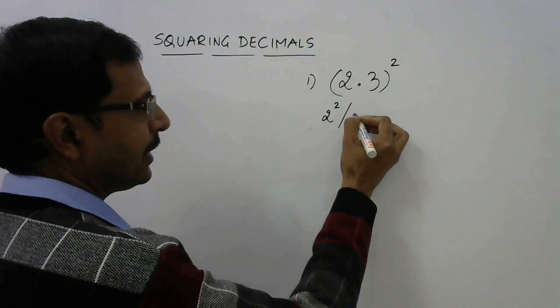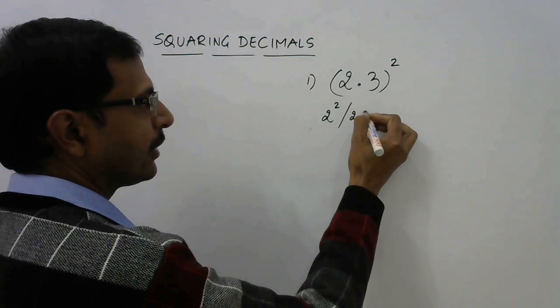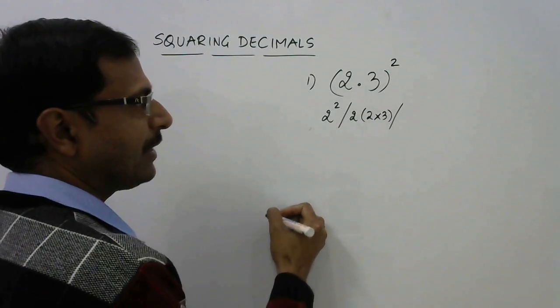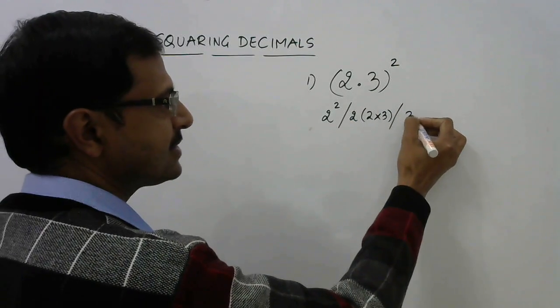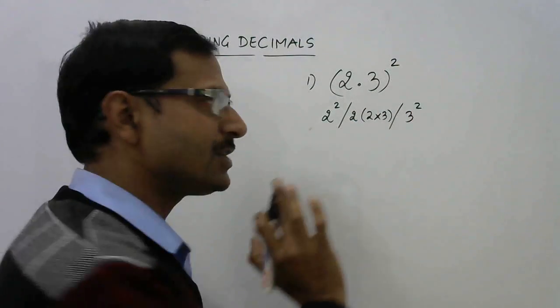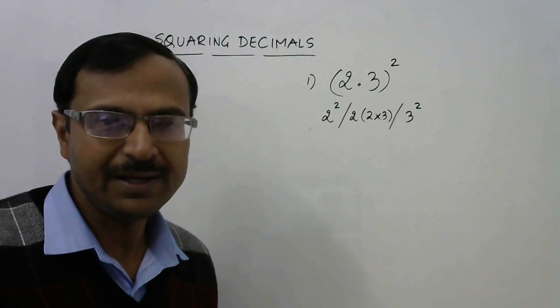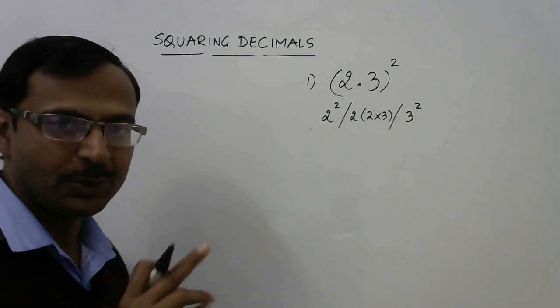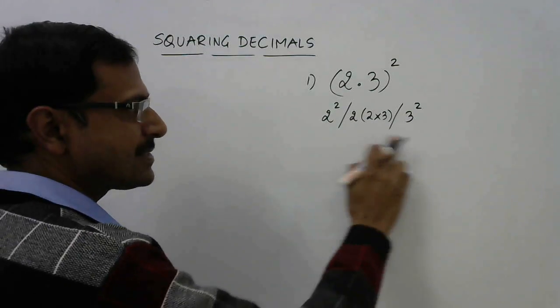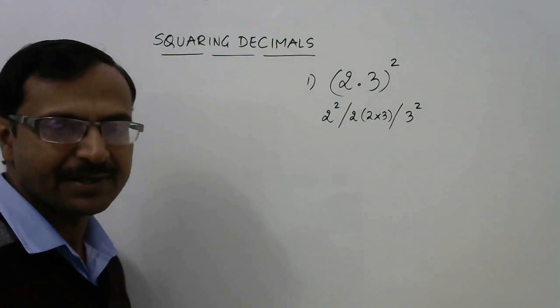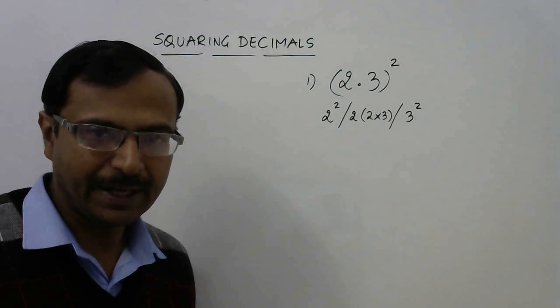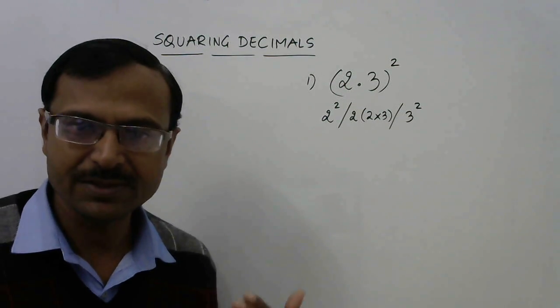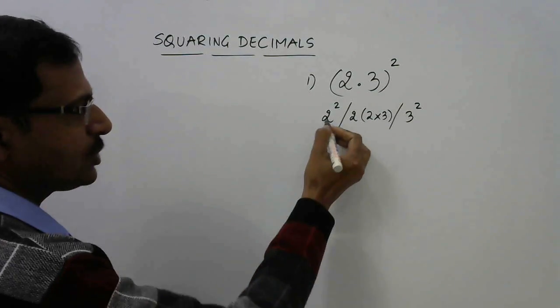Then we will write double of the product of these two numbers: 2 into 3. And then we will write the square of the units digit, that is 3². So these are the three things you have to write separated by slashes. Very easy. After this you will have the answer. See, I am writing this step just for your convenience. In the subsequent examples I will not be writing this step and reducing the amount of time I am consuming to find out the square. See, 2² is 4.